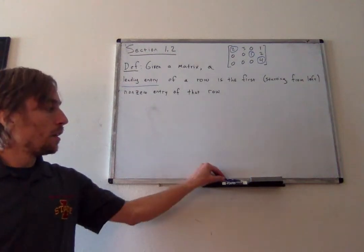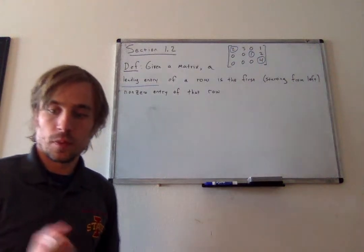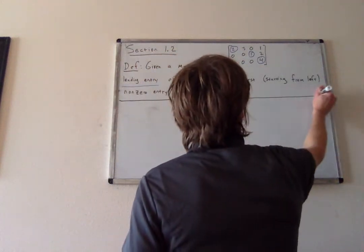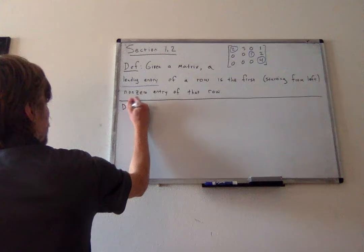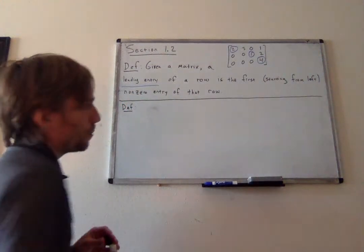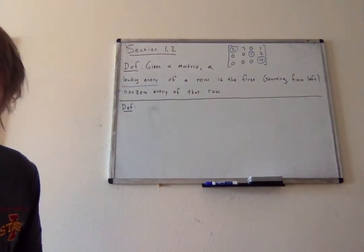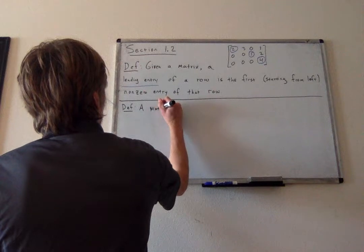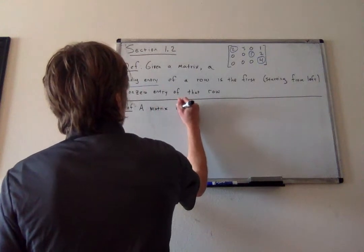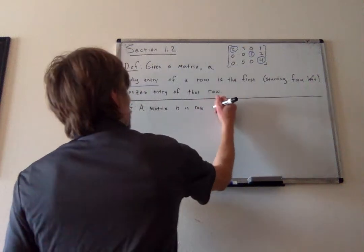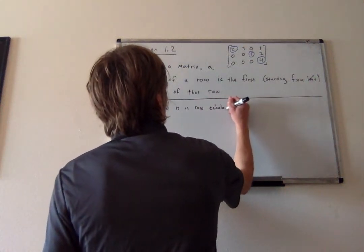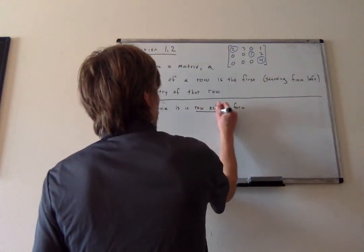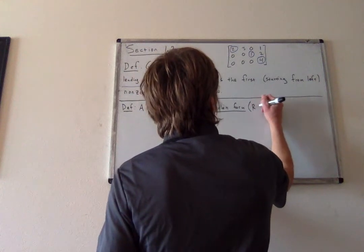Next big definition. This definition is going to formalize the type of matrix we wanted to find in section 1.1. A matrix is in row echelon form — spelled E-C-H-E-L-O-N, often abbreviated REF — if it satisfies three properties.